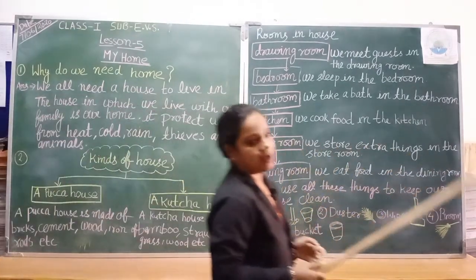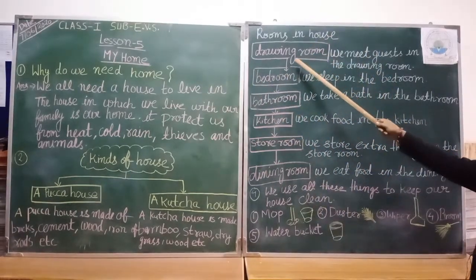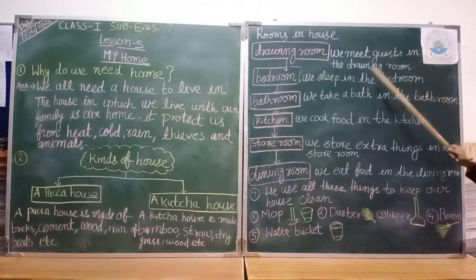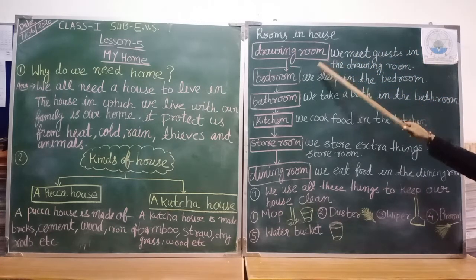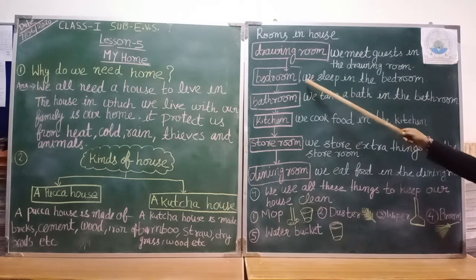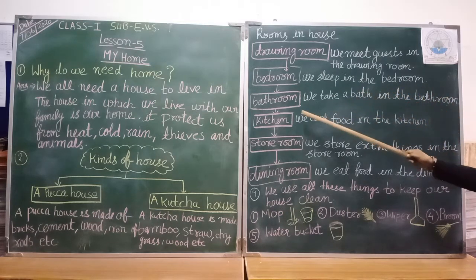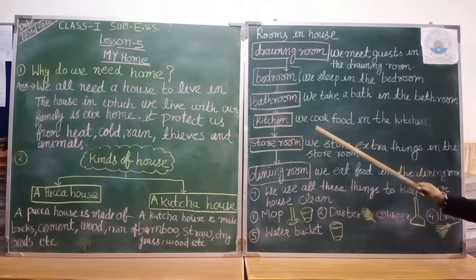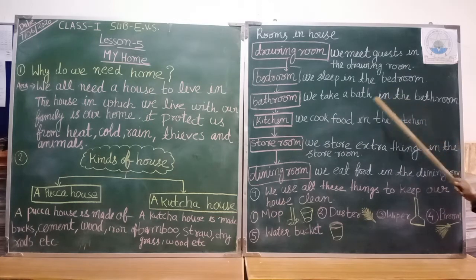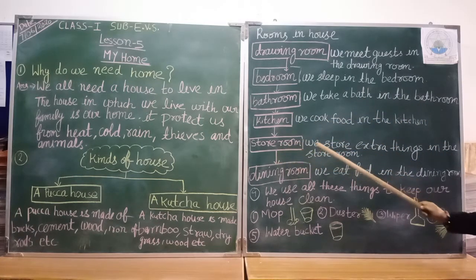Rooms in a house. There is a drawing room — we meet guests in the drawing room. Bedroom — we sleep in the bedroom. Bathroom — we take a bath in the bathroom. Kitchen — we cook food in the kitchen. Store room — we store extra things in the store room.